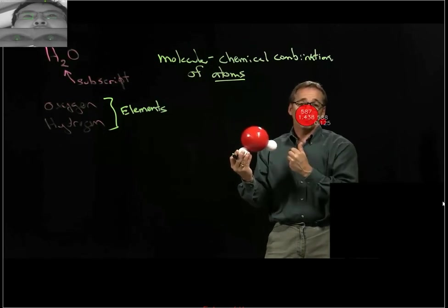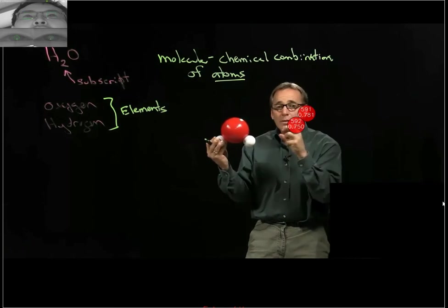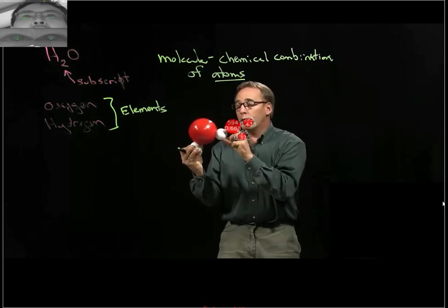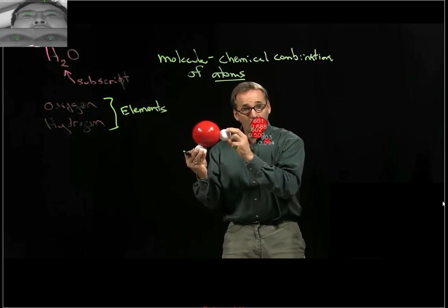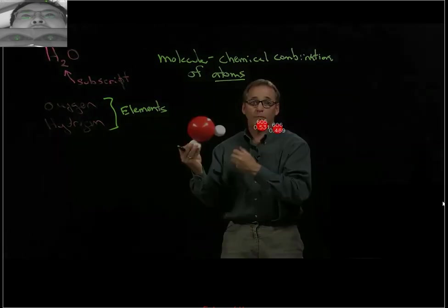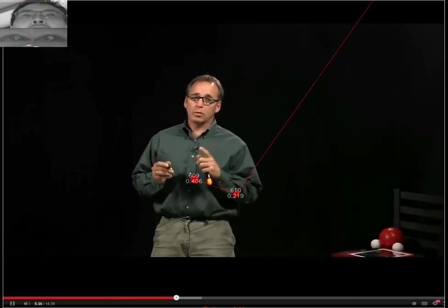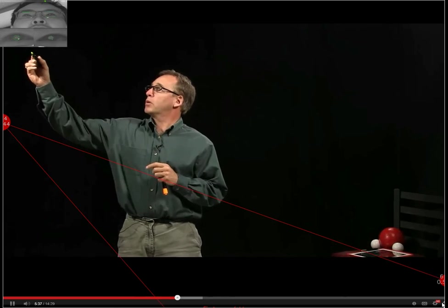We can zoom in even further and look at the structure of an atom. And these are also made of particles. Atoms are composed of three different types of particles. Protons, neutrons, and electrons.